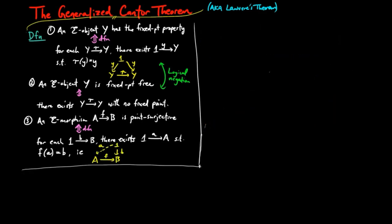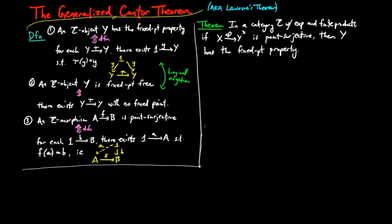We are now ready to prove Levere-Cantor's theorem. In a category E with exponentials and finite products, if phi from x to y to the x is point surjective, then y has the fixed point property.